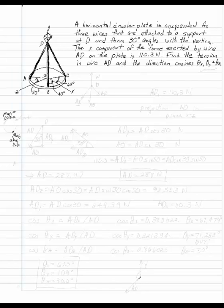A horizontal circular plate is suspended from three wires attached to a support at D that form thirty-degree angles with the vertical. So here's our support at D. We've got these three forces coming down, each of them making thirty-degree angles to the vertical.